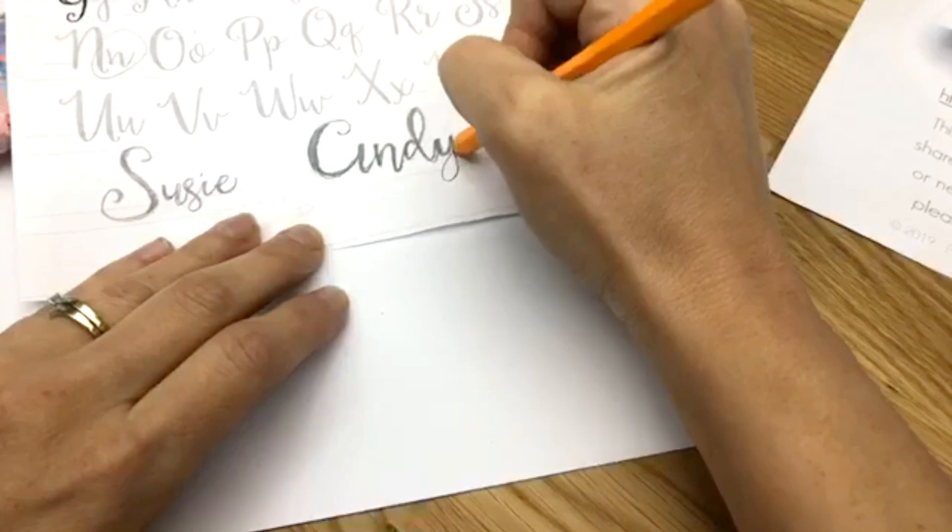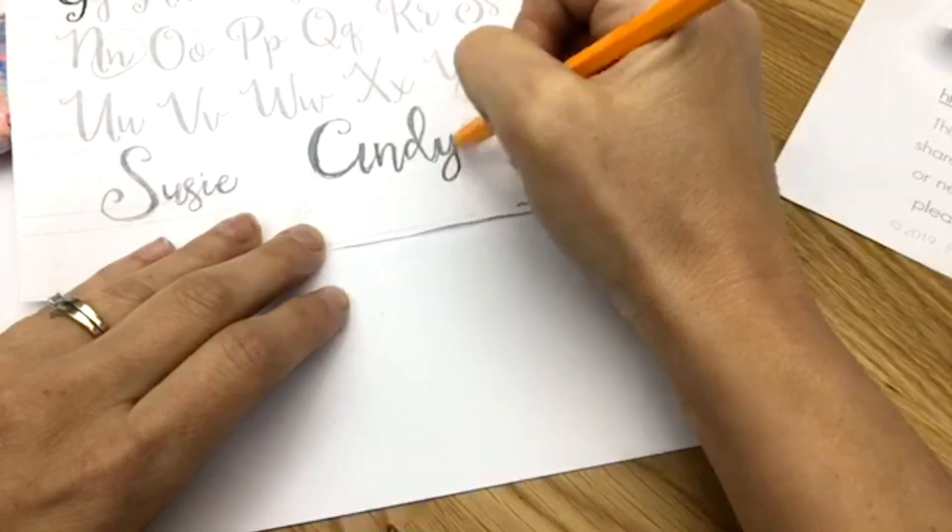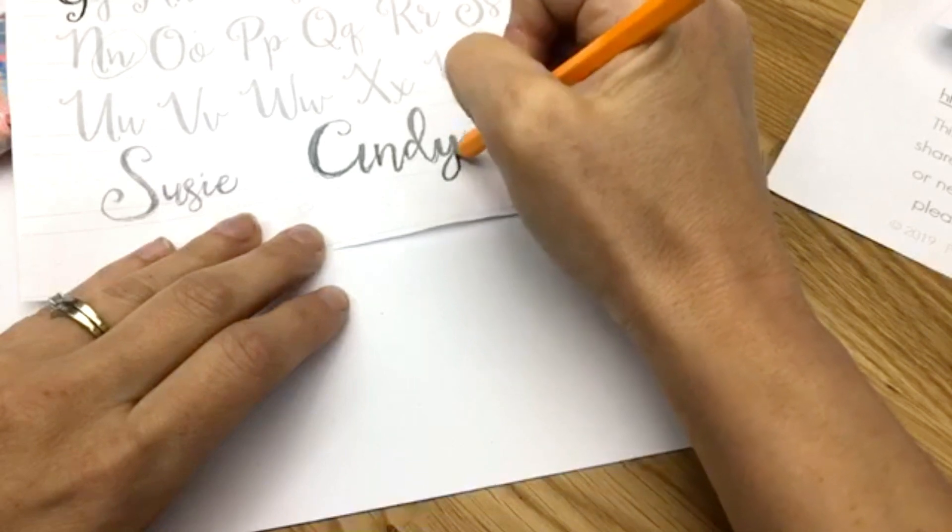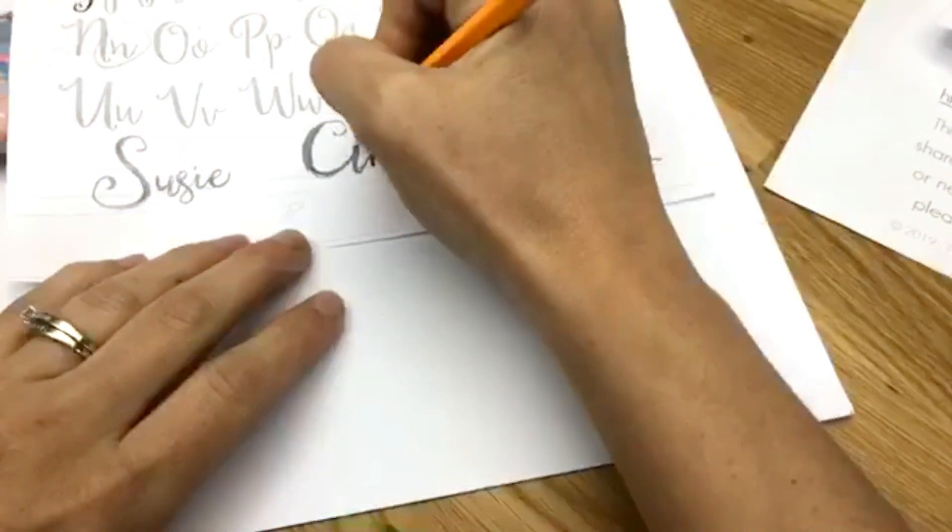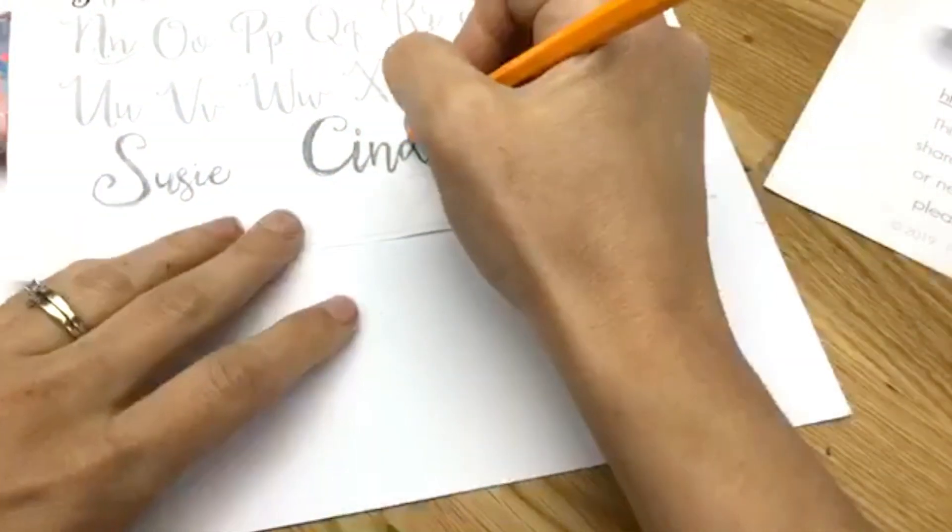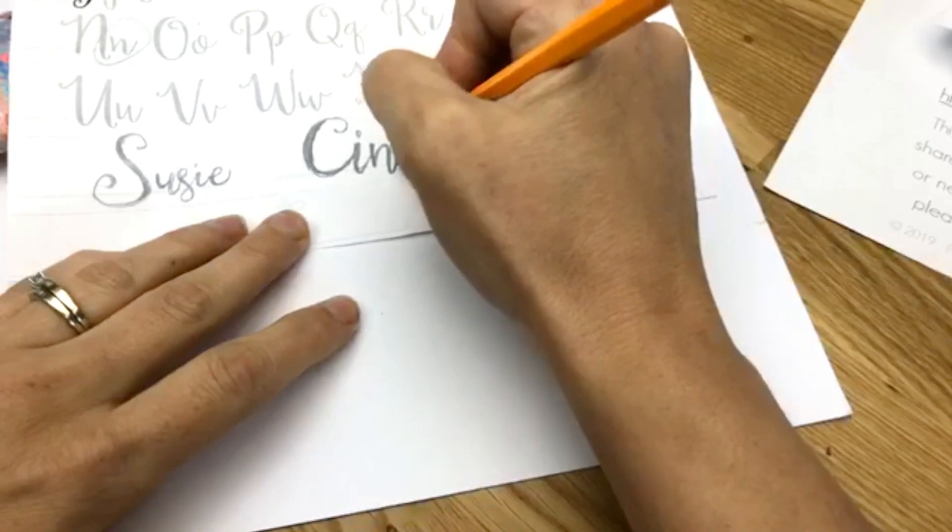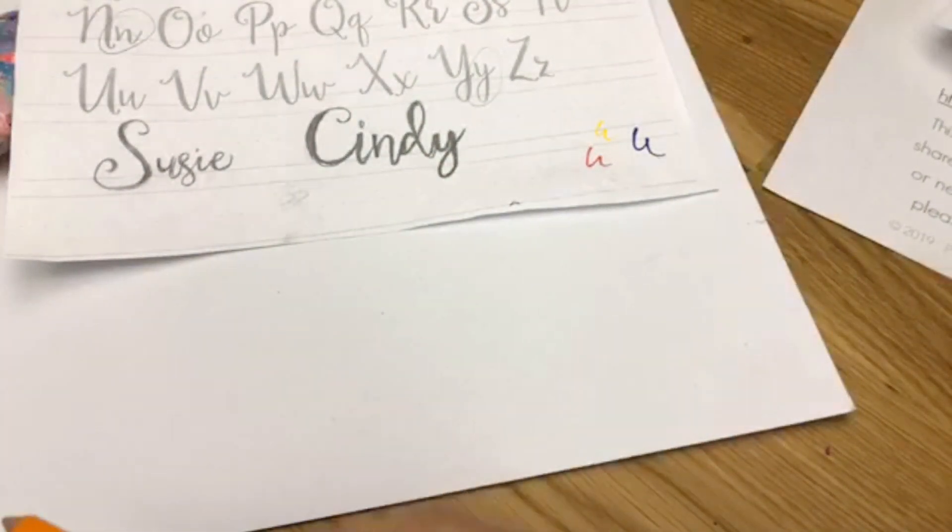You kind of get the idea of how it's going to go together before you take it to your rock. I never hand letter something on my rock without practicing on a piece of paper first. So now you know how your letters are going to kind of go together. You'll have a better idea before you're going on to your rock to write the word.